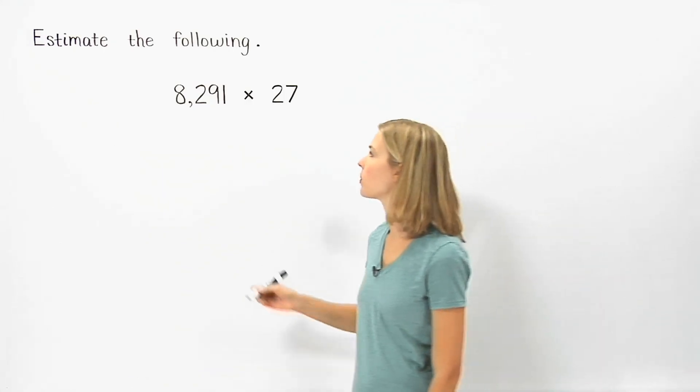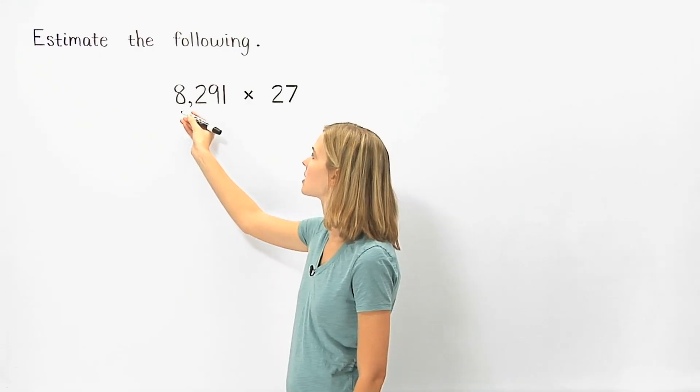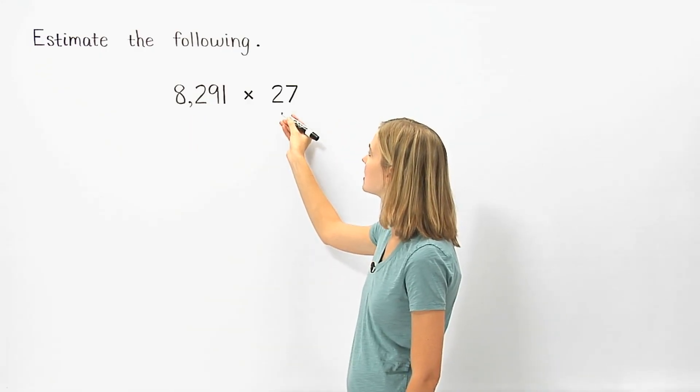We round 8,291 to the nearest thousand, and we round 27 to the nearest ten.